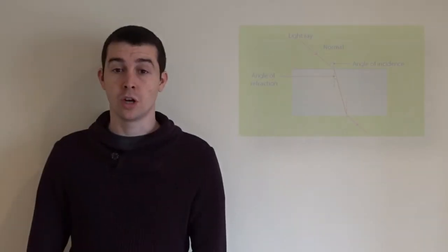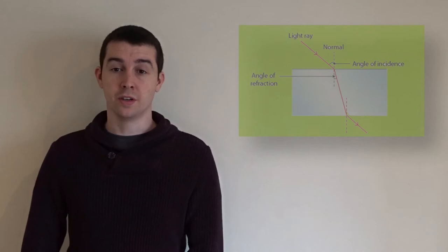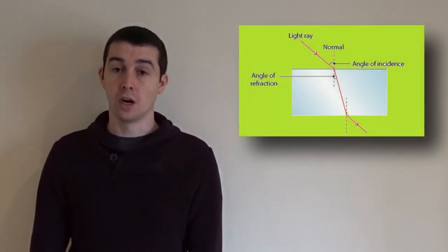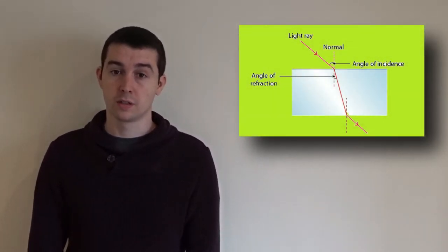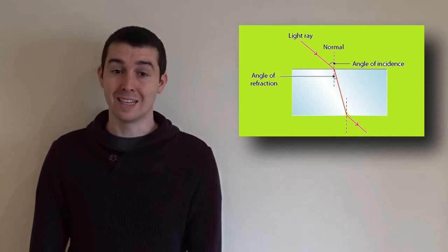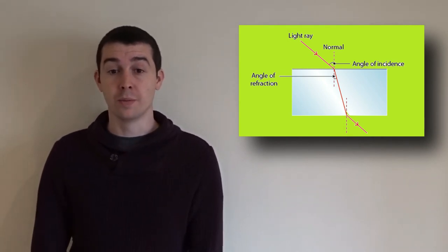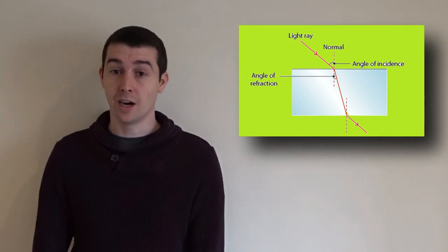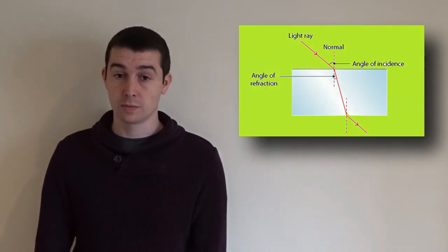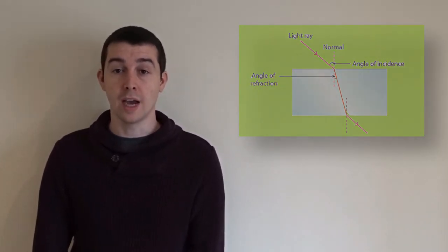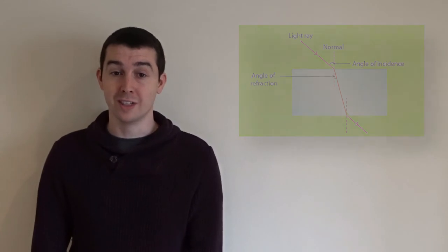When light rays travel from a material with a low refractive index to a material with a high refractive index, the angle of refraction is less than the angle of incidence. When light rays travel from a material with a high refractive index to a material with a low refractive index, the angle of refraction is greater than the angle of incidence.